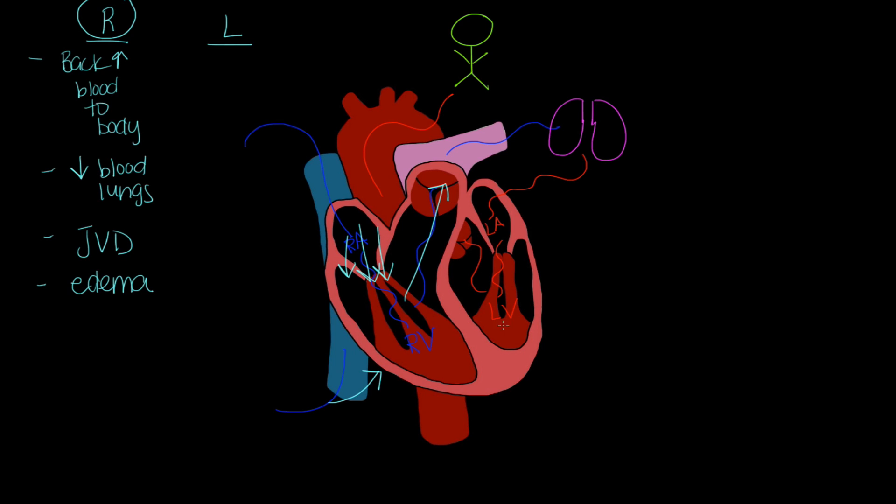Now if we focus on the left side. If we focus on the left side of the heart, remember the left side, that left ventricle, the job is to squeeze the blood out through the aorta to the body. But again, if we're talking about heart failure, that this squeeze is not effective enough, then that means that I'm not going to have enough blood getting out to the body. So instead of it backing up to the body, I actually have a decreased amount of blood out to the body.